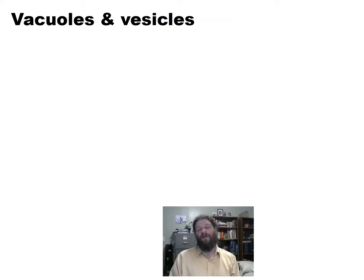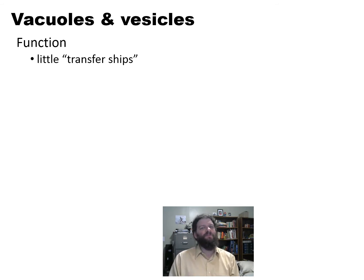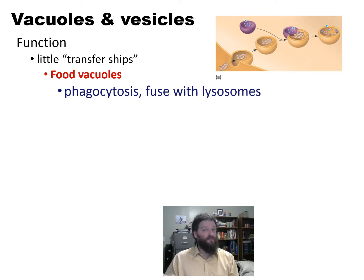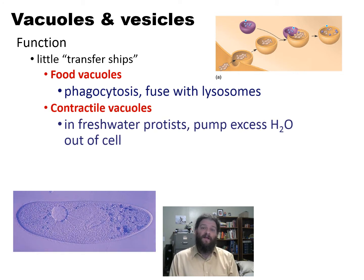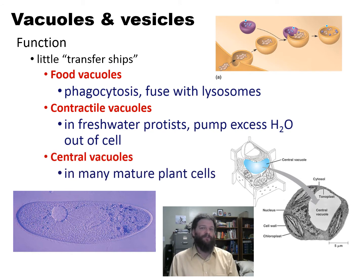Let's take a couple moments to codify some of the important points about these vacuoles and vesicles. They are really to store stuff and allow material to move from one place to another. In the case of food vacuoles, they are formed through phagocytosis. They are eventually going to fuse with the lysosomes, which we'll talk about in a second. The contractile vacuoles in freshwater protists pump the excess water out of the cell. The central vacuoles in plants — let's take a minute to talk more about those.